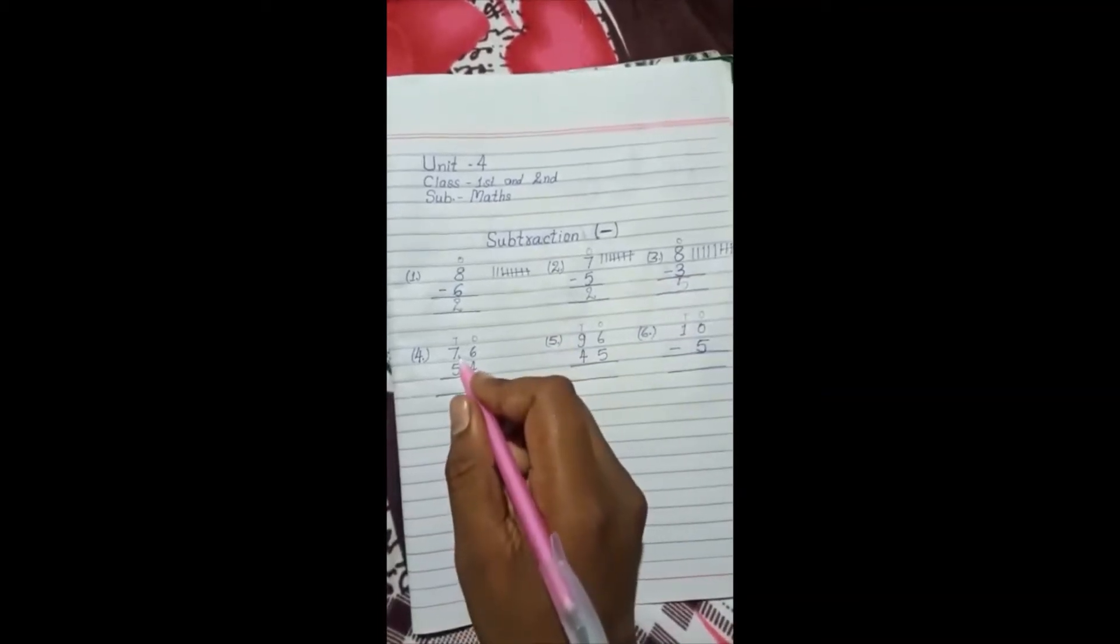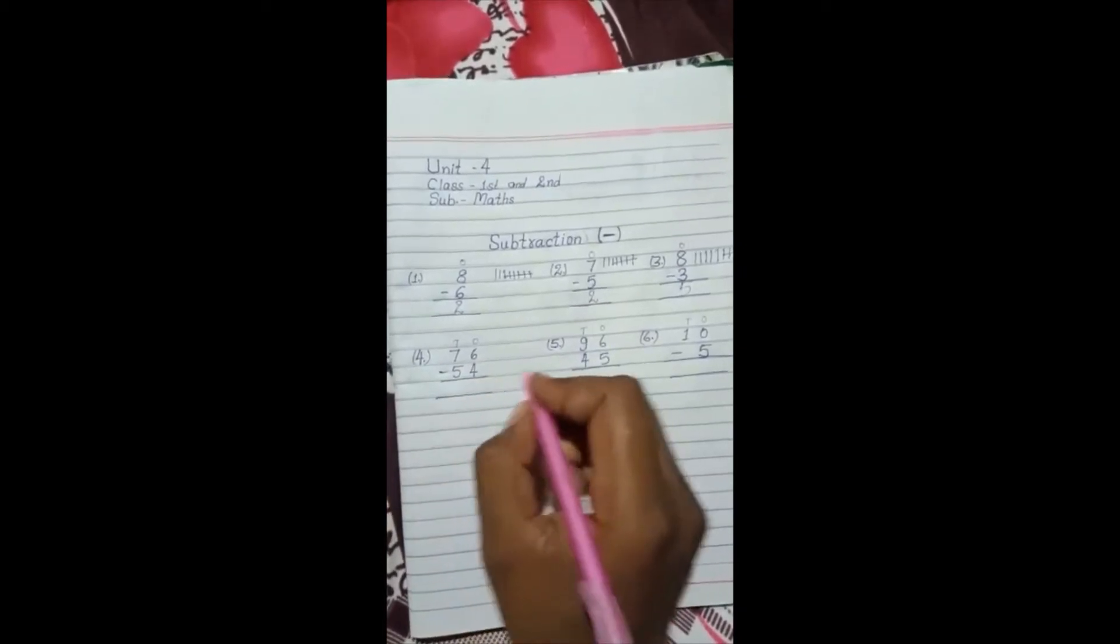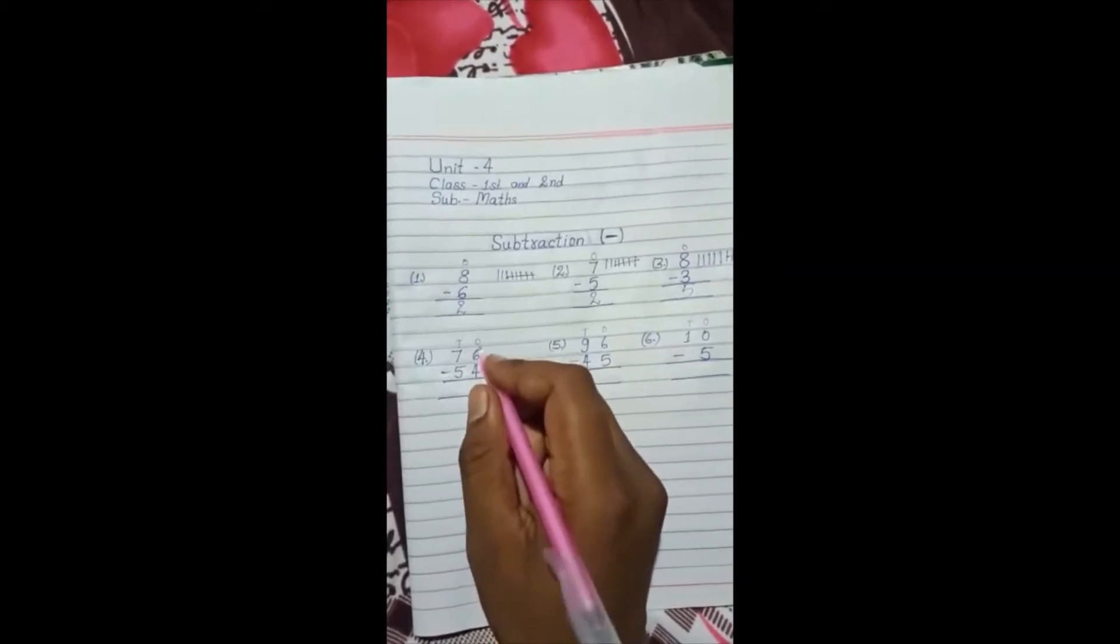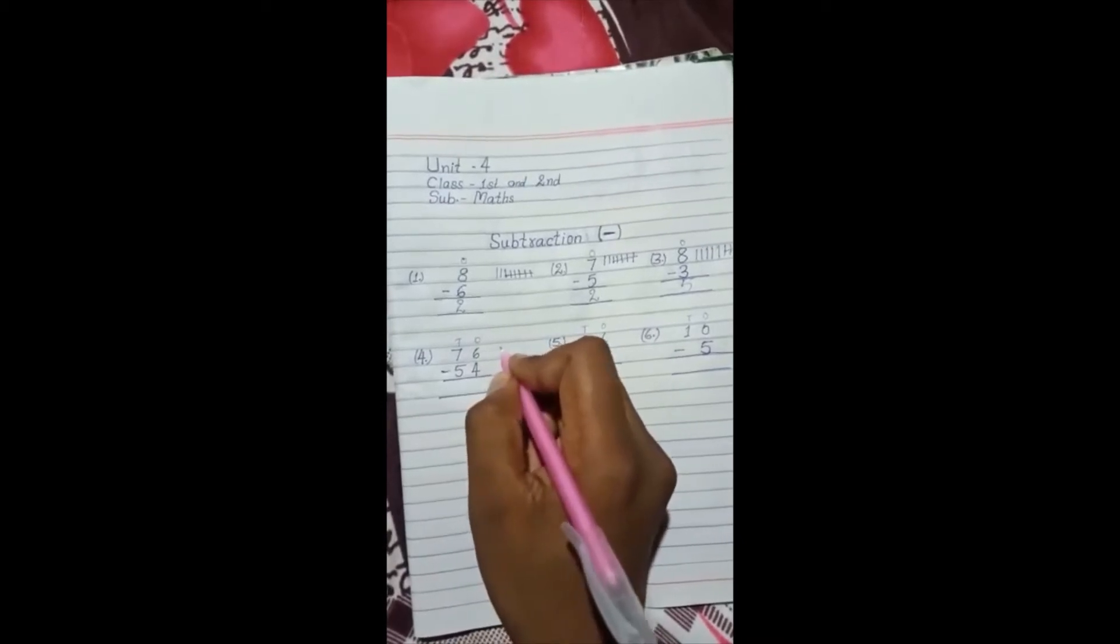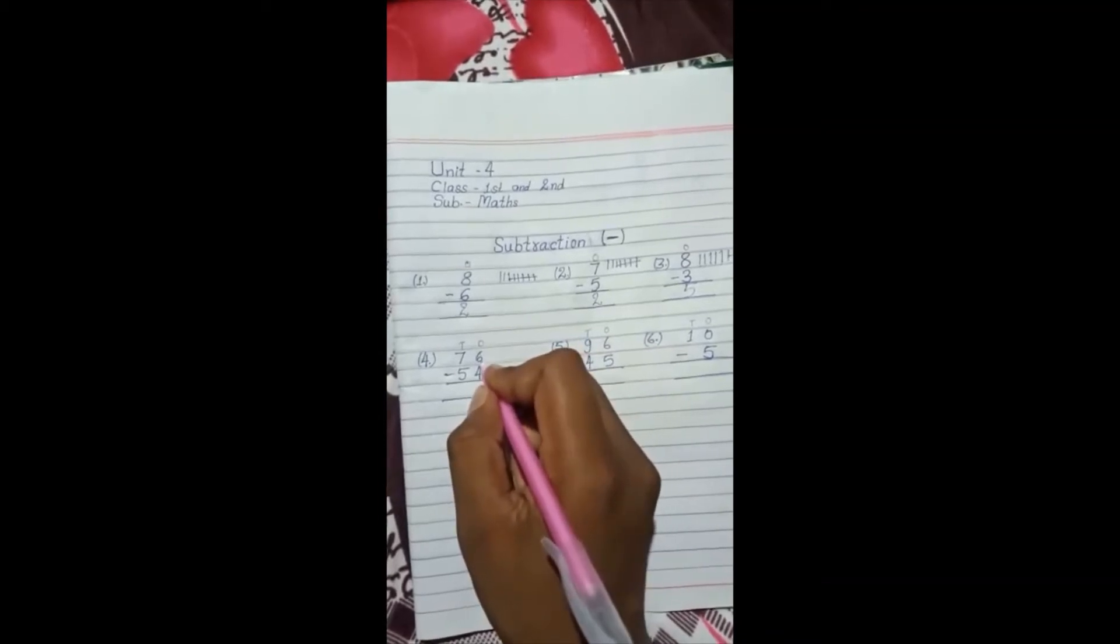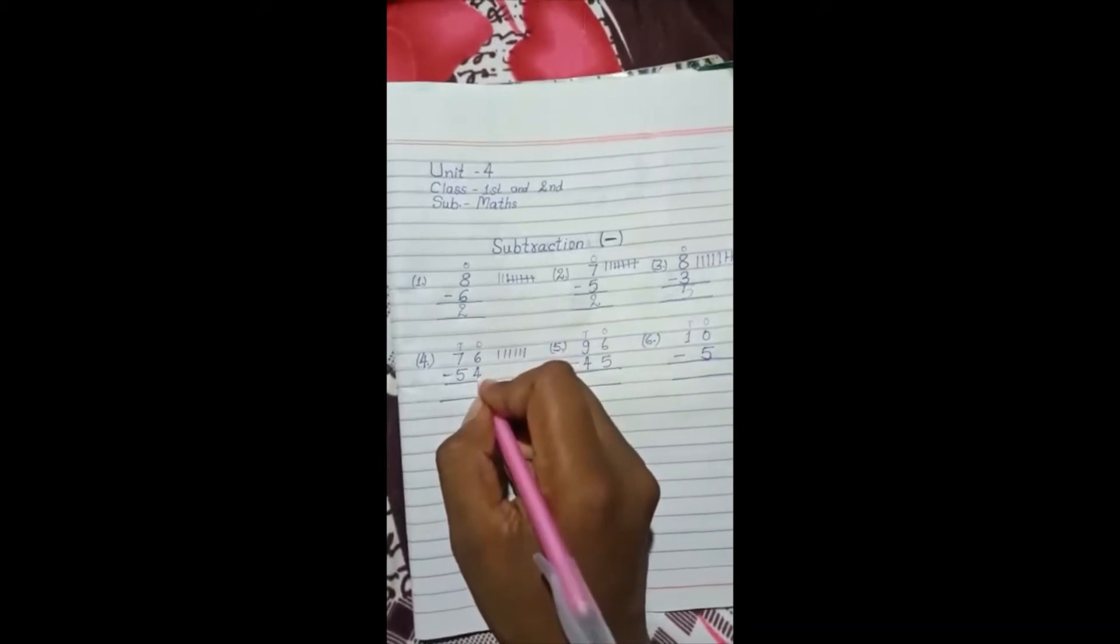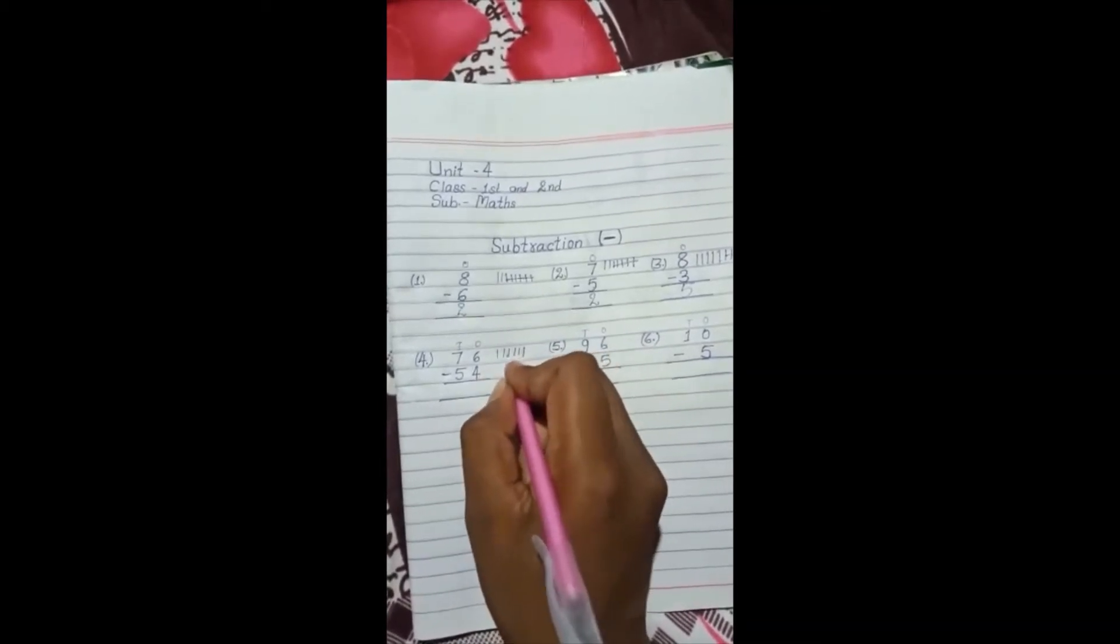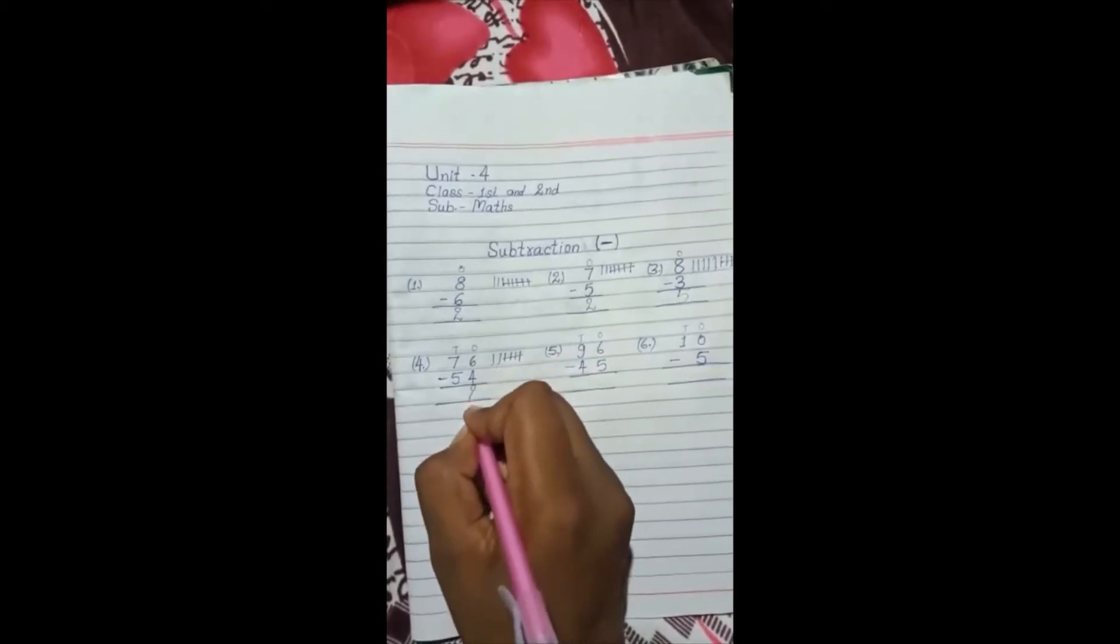Now 76 minus 54. 76 minus 54. In ones place is 6. In ones place we'll draw 6 lines: 1, 2, 3, 4, 5, 6. How do we subtract? 4. Count 1, 2, 3, 4. How many remain? 1, 2. We write 2.